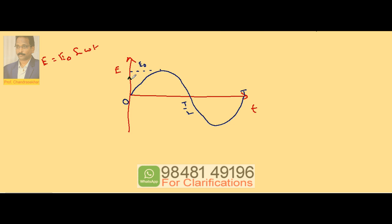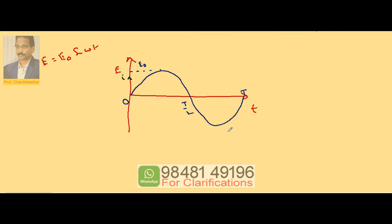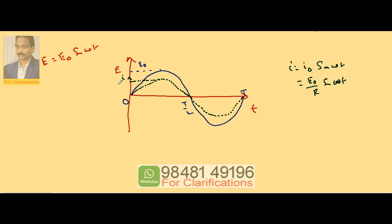Now drawing the current graph on the same axes: we already know I = I₀ sin(ωt), where I₀ = E₀/R. Since I = (1/R) × E₀ sin(ωt), the current curve is also a sine curve but with a smaller peak value I₀ compared to E₀. Both graphs are sine curves.